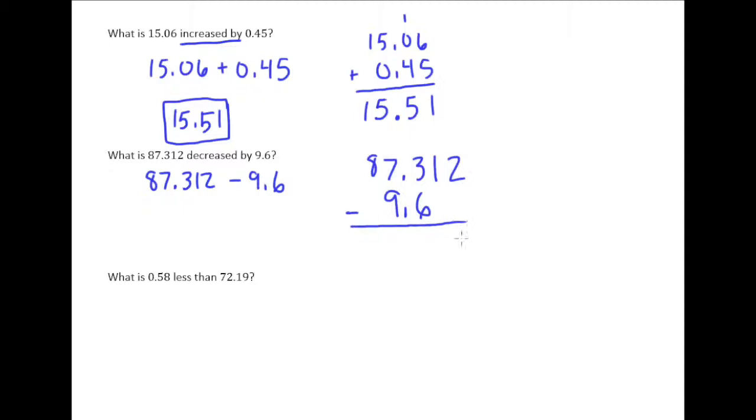So 2 minus nothing is 2. 1 minus nothing is 1. I'm going to do a little bit of borrowing here. So I'll borrow from the 7. And then my 3 becomes a 13. So 13 minus 6 is 7. So we'll put a 7 there, drop our decimal point straight down.